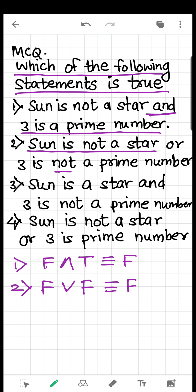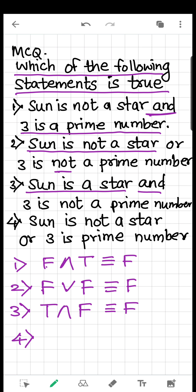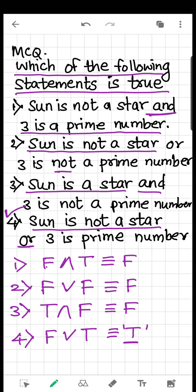If you are not following quickly, it's okay — pause and go slowly, write out the truth tables from the earlier page on paper, build them yourself, and then solve. Option 3: 'Sun is a star AND three is not a prime number.' True AND false is false. Option 4: 'Sun is not a star OR three is a prime number.' False OR true is true. So the fourth option is our answer.